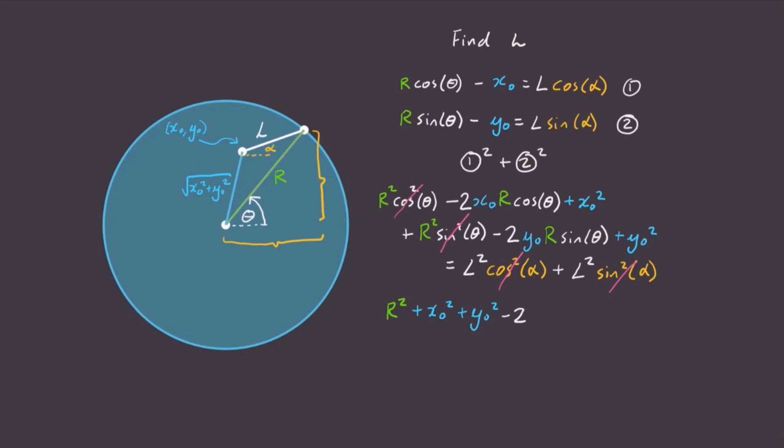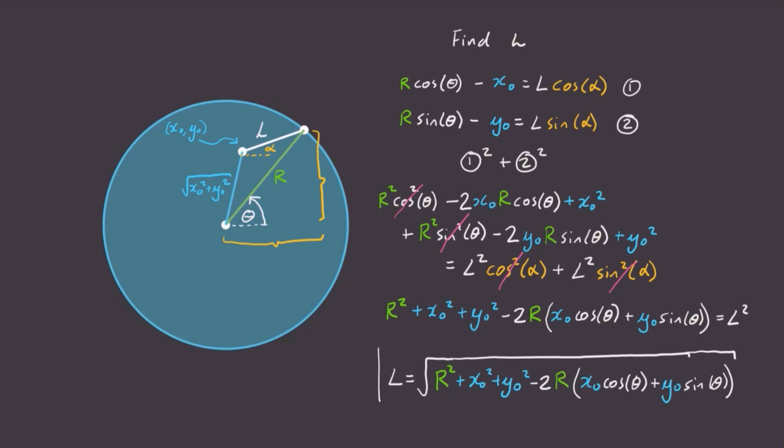And after a bit of simplifying and factoring, we get this expression. Now square root both sides of this to get our expression for l. And that's it. That's the formula which governs the length of the white line at any angle theta around the circle. We've done it.